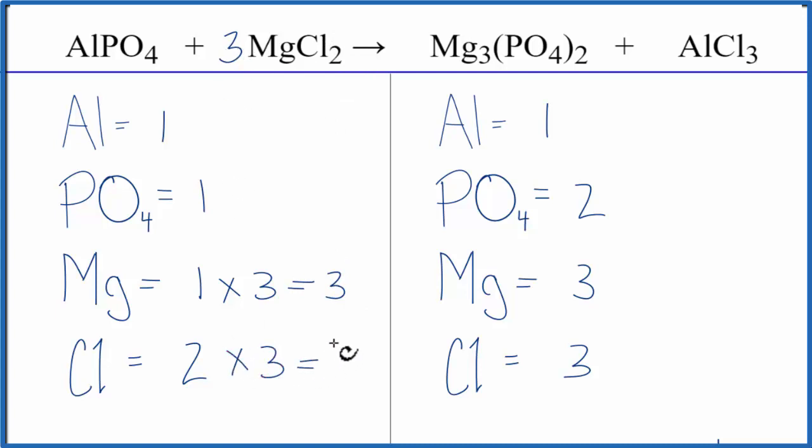But we could balance the chlorines now by just putting a two in front of the aluminum chloride. So three times the two, that will give us six. So that's balanced. And now we have one times the two, two aluminum atoms.